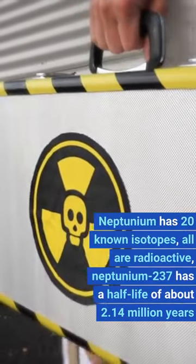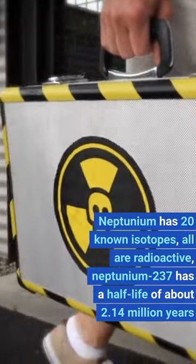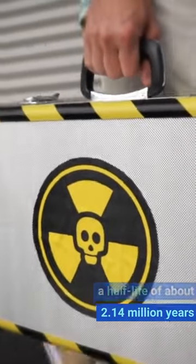Neptunium has 20 known isotopes, all are radioactive. Neptunium-237 has a half-life of about 2.14 million years.